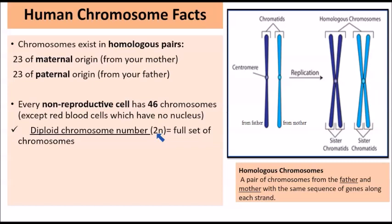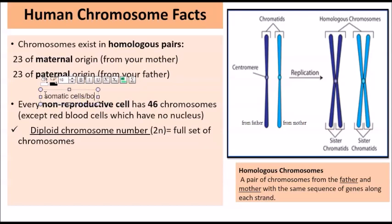So you have half of the chromosomes from the mother and half from the father, giving a total of 46 chromosomes in all non-reproductive cells. By non-reproductive cells, we are referring to somatic cells, also known simply as body cells — all the cells that are not involved in reproduction. You should expect that they would all contain 46 chromosomes — that is the diploid chromosome number, the full set of chromosomes within the body cells.